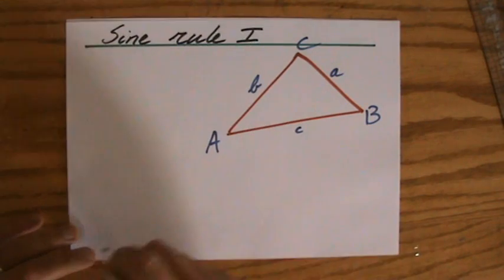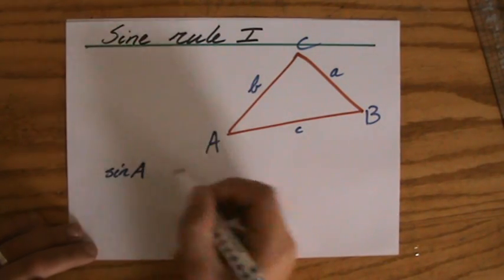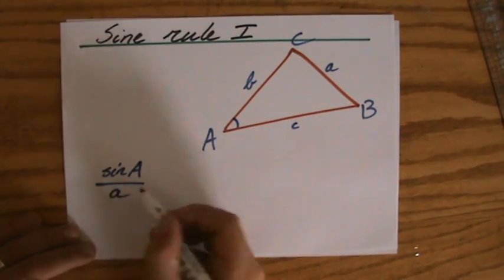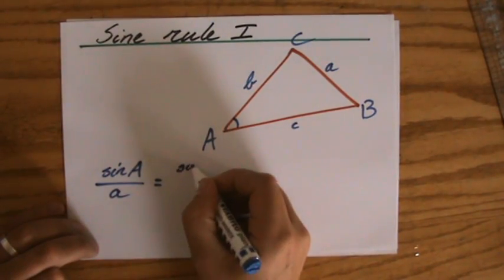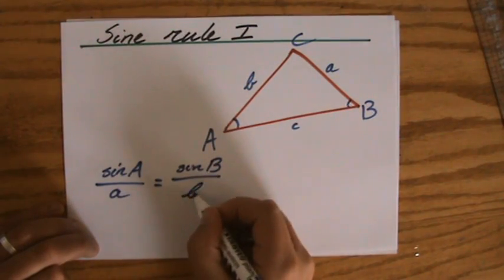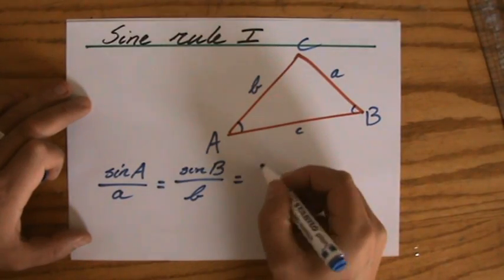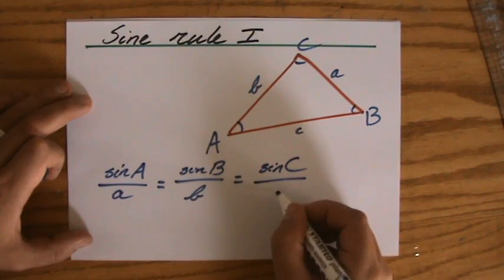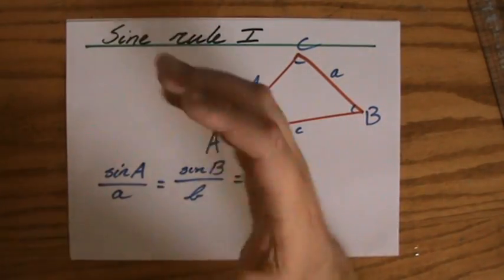Now, what does the sine rule say? It says, well, the sine of A, so that's the sine of this angle, divided by its teammate length. Is actually the same as the sine of B divided by his or her teammate length. And it's actually also the same as the sine of C, capital C, divided by that one's teammate length. That is the sine rule.